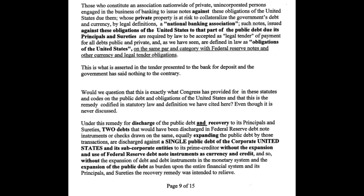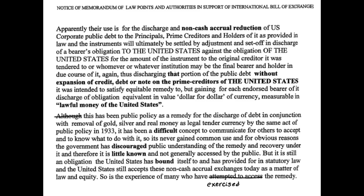You have to notice these institutions with this information so they can't pretend they've never seen it. If they move forward knowingly, they are committing crimes and treason. These instruments will ultimately be settled by adjustment and set-off, discharging the bearer's obligation to the United States against the obligation of the United States for the amount of the instruments. You process that as a check and send it into the Treasury Department when you do your taxes to get your credit back.